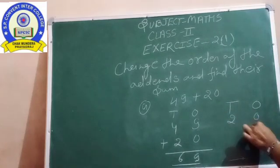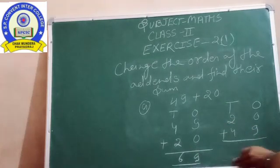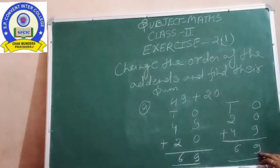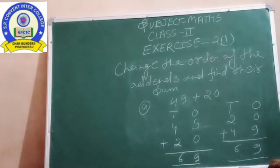Your order is changed: 20 plus 49 equals 69. But the answer will be the same. If you change the order, then the answer is still the same. Clear?